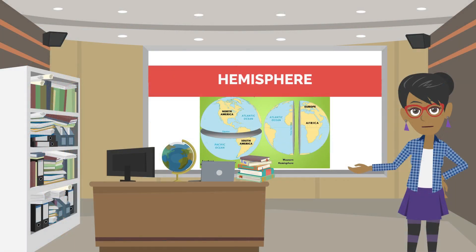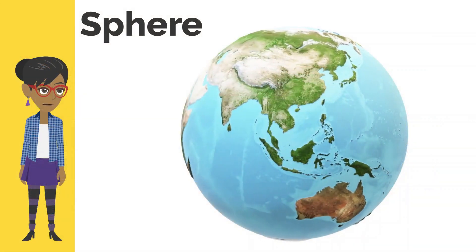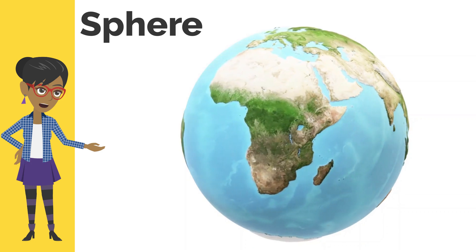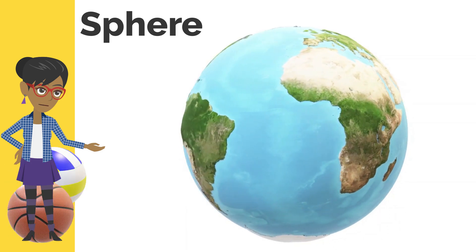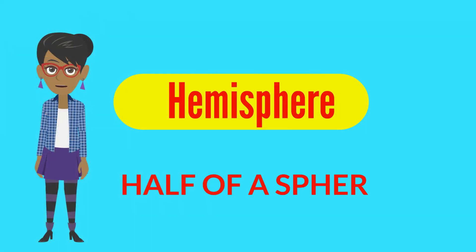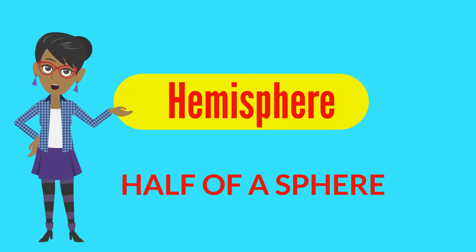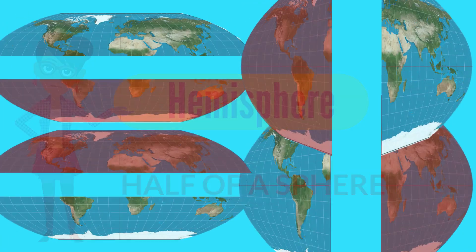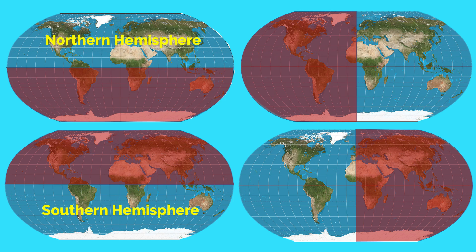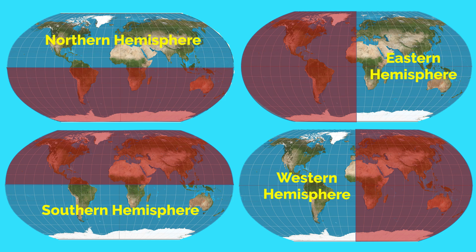Let us start with the first concept of this lesson, which is Hemisphere. The Earth is an example of a sphere as it is shaped round like a ball. Other examples of spheres include a soccer ball, a basketball, and a tennis ball. A Hemisphere is half of a sphere — we use the word to describe one half of the Earth. Geographers have divided the planet into two sets of two hemispheres: the northern and southern hemispheres, and the eastern and western hemispheres.